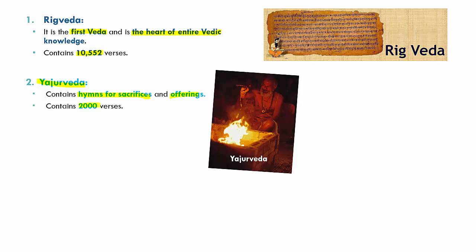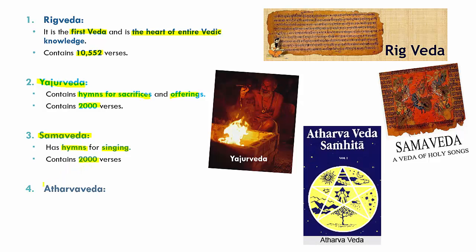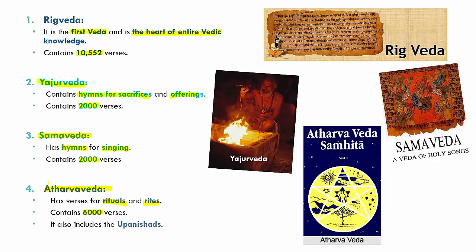The third Veda is the Samaveda, which has hymns for singing and also contains about 2,000 verses. Lastly, we have the Atharvaveda, which has verses for rituals and rites and contains about 6,000 verses. The Atharvaveda also includes the Upanishads.